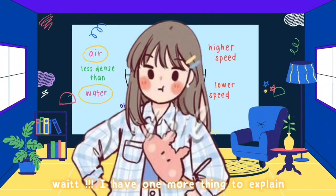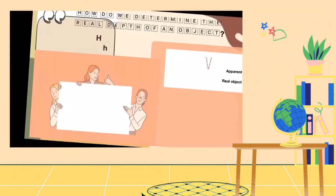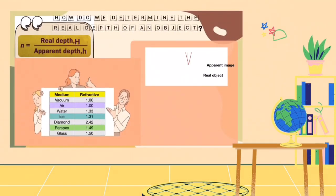Wait, I have one more thing to explain. We can form a new formula by using real and apparent depth by dividing real depth by the apparent depth. So, you will get the refractive index of the medium. Refractive index is the strength of the bending of light when light rays travel from the vacuum to a medium.